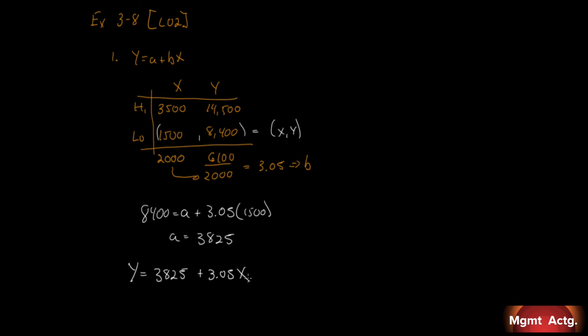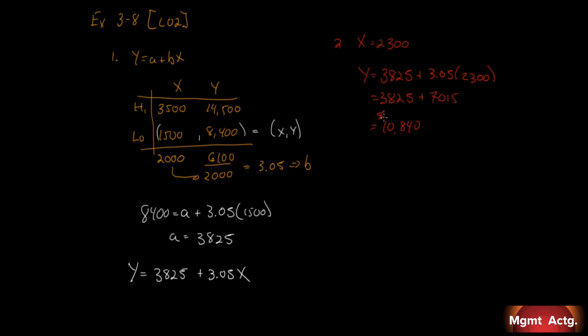Part two asks: using the cost formula derived above, what blood test costs would you expect during a month in which 2,300 blood tests are performed? With X equal to 2,300, Y = 3,825 + 3.05 times 2,300, which is 3,825 plus 7,015, giving us $10,840 for the month. That completes Exercise 3.8.